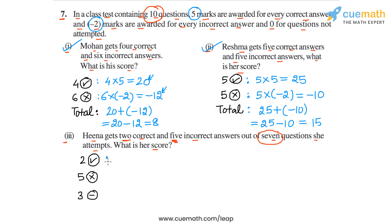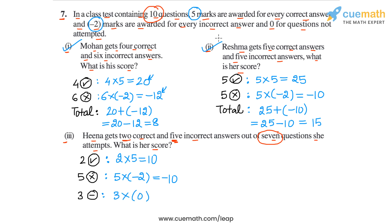For the 2 correct answers, Hina will get 2 into 5, or 10 marks. For the 5 incorrect answers, she will get 5 into minus 2, or minus 10 marks. For the 3 unattempted questions, she will get 3 into 0 marks per question, because for unattempted questions, 0 marks are awarded. So 3 into 0 is 0.